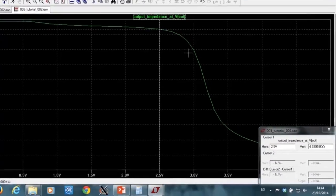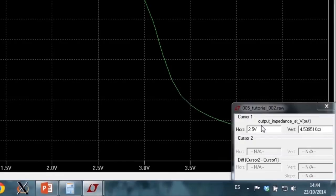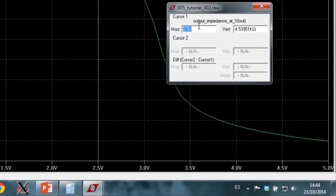I want to compute the output resistance when the voltage is 2.5 volts. This leads to an output resistance of 4.53 kilo ohms, so very close to my estimation.